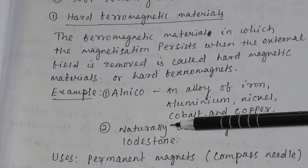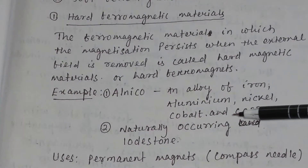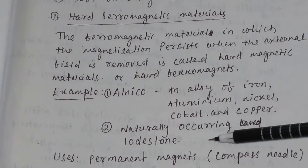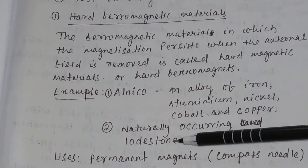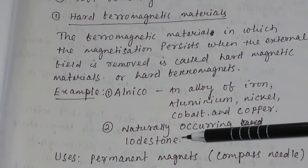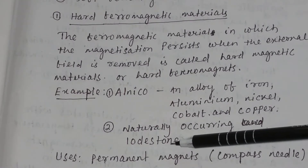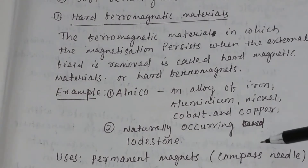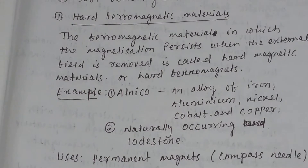Hard ferromagnetic materials include naturally occurring lodestone. The uses of hard ferromagnetic materials are in the making of permanent magnets, for example, compass needles.